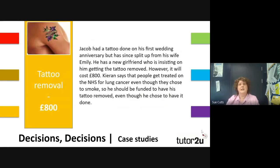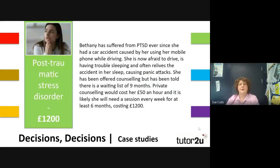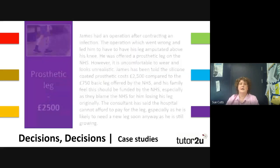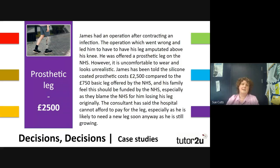The next person is Jacob, who requires tattoo removal at a cost of £800. Then we have Bethany, who suffers from post-traumatic stress disorder and is seeking counselling at a cost of £1,200. We have Dylan and Daisy, a couple who are trying to start a family. They need help with conception and have requested IVF treatment at a cost of £4,000. Finally, we have James, who has a prosthetic leg and is wanting a silicone leg to make it more comfortable to wear, at a cost of £2,500.